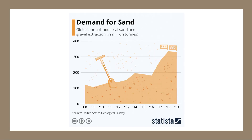Another interesting example of pressure on natural resources from fast growth is sand and gravel. Sand and gravel are being extracted from the earth at an increasing rate — something like 330 million tons were dug up in 2019, most of it in the United States. This is another clear example of the environmental challenges that come from economic activity.